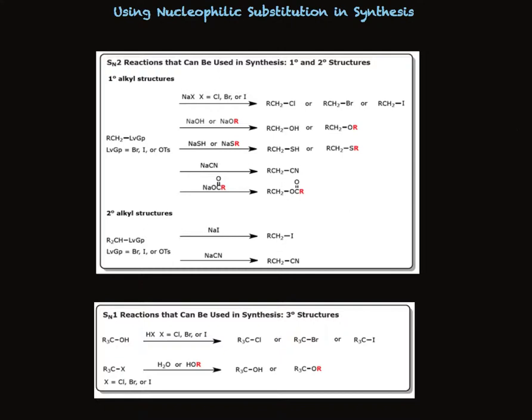So for instance, you know that when you have a primary group with a leaving group like bromide, iodide, or tosylate, you could treat that with these various reagents to make a very specific product. Alkyl chlorides, alcohols, ethers, nitriles, esters.